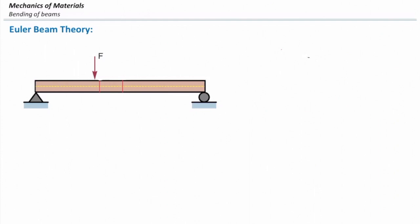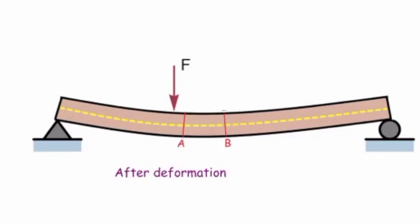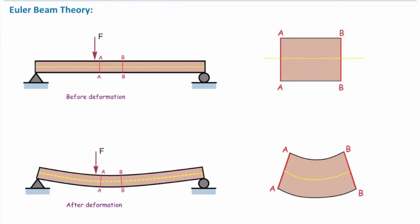Let's develop the equation for determining stresses in a beam. Consider a simple beam subjected to load — it doesn't matter how many loads are acting. This beam is shown before deformation. I want to take out a piece of it, shown by section A and section B. If I take it out, the longitudinal axis of the beam is shown with a dashed yellow line, and we have two flat cut sections, cut section A and cut section B. After applying the load, that beam deforms and deflects.